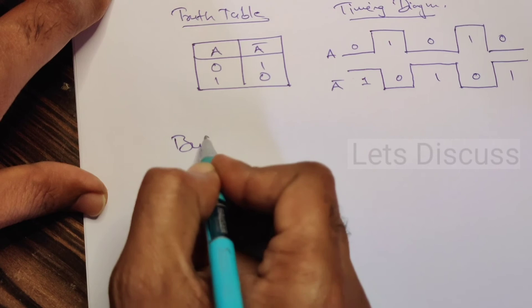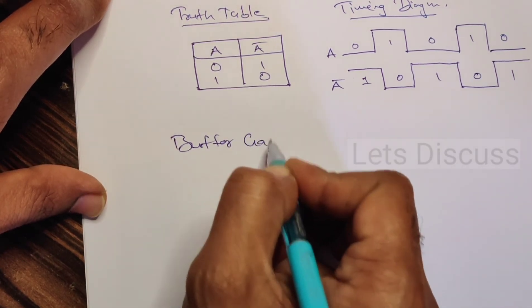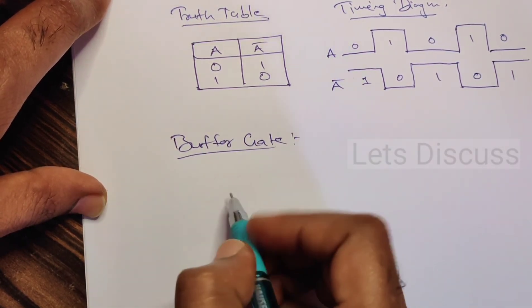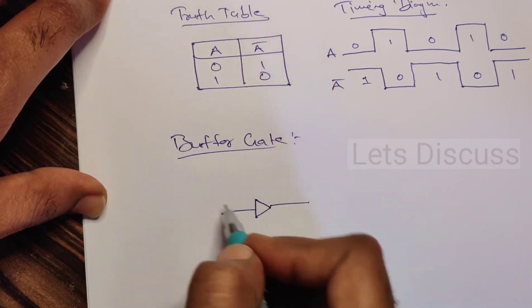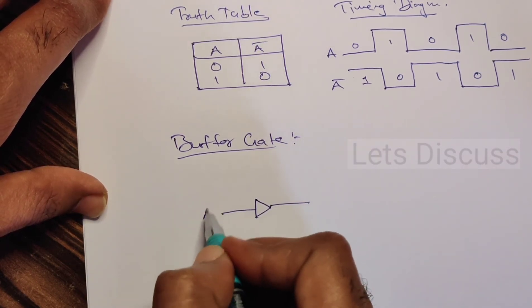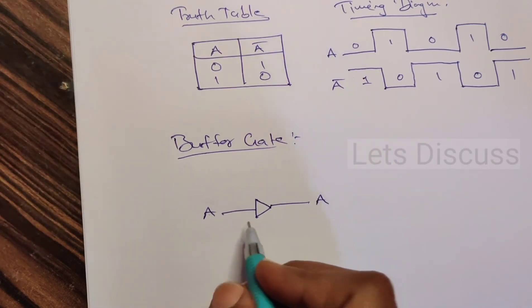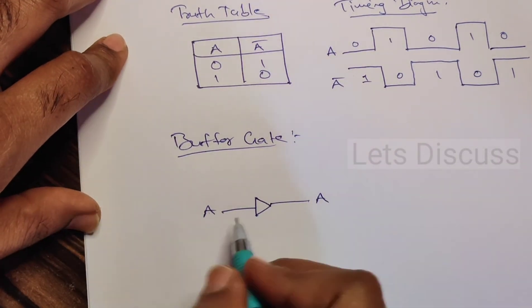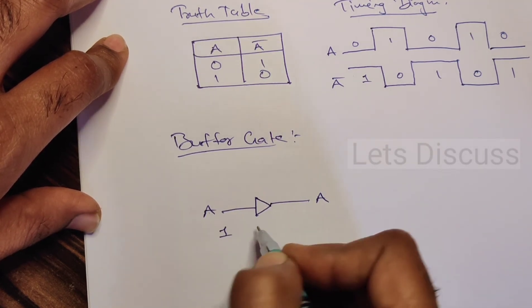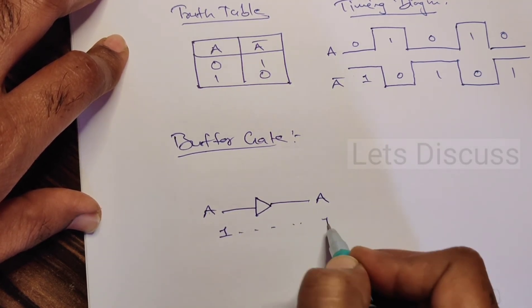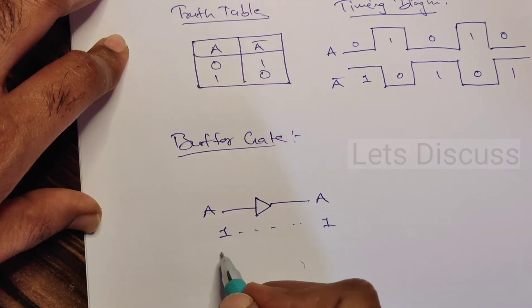And similarly, let's check with the buffer gate. Buffer gate also has only one output and one input. This is the input and this is the output for buffer gate. Whatever we feed at the input, the output is the same. If we feed one, it is one. If we feed zero, it is zero.